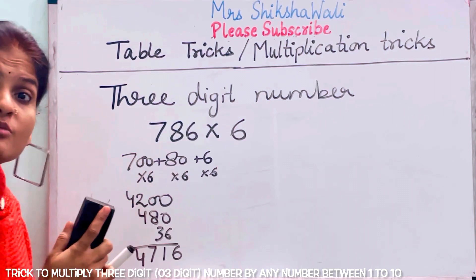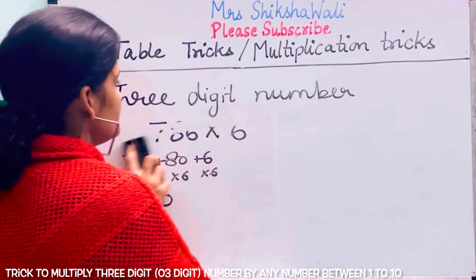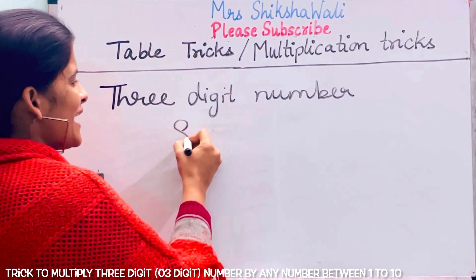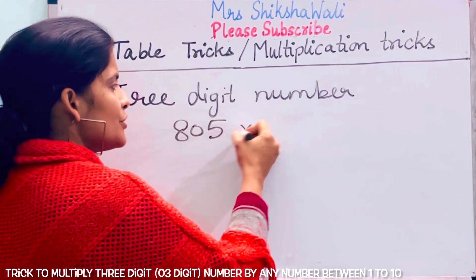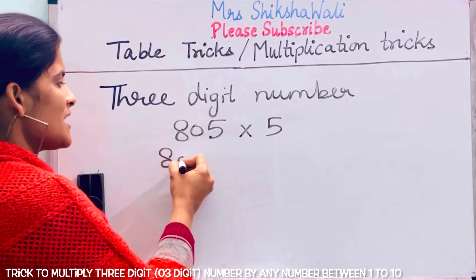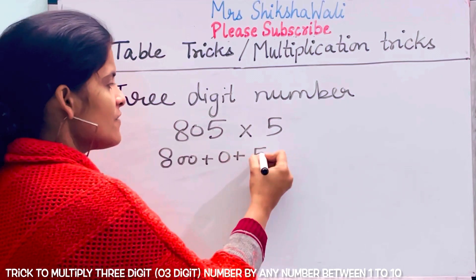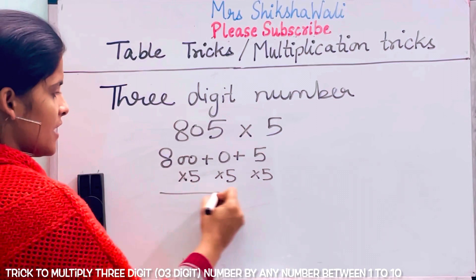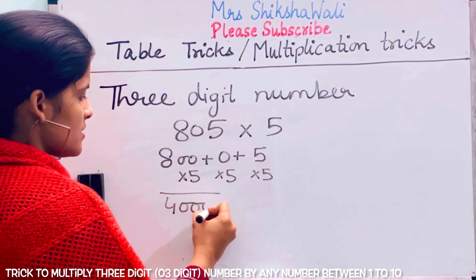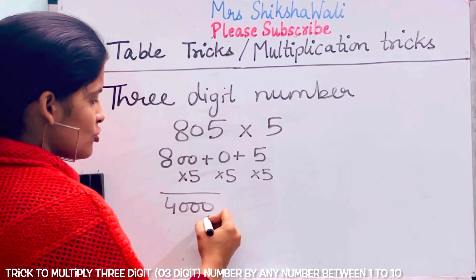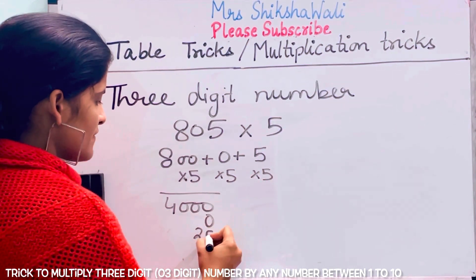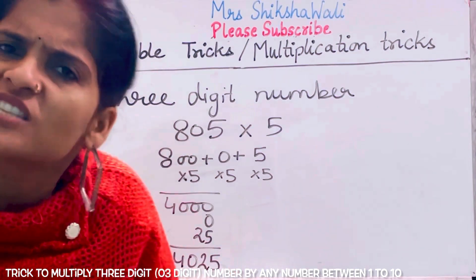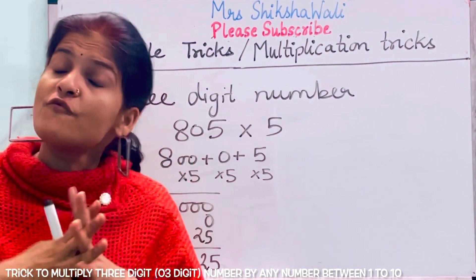There is a number that has a zero in it — look: 805 × 5. The expanded form is 800 plus 0 plus 5. Now: 800 × 5 = 4000, 0 × 5 = 0, and 5 × 5 = 25. The answer is 4025. I hope you have understood what to do.